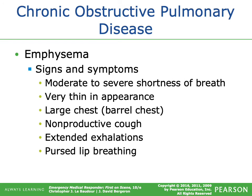Someone with emphysema presents with moderate to severe shortness of breath, is generally very thin in appearance with a large barrel chest, and often has a non-productive cough because there isn't increased mucus production. You'll see extended exhalations — they have a hard time getting air out — and pursed lip breathing, where the patient holds their lips tightly while exhaling. This increases the exhalation phase and causes back pressure deep within the lungs, believed to assist with keeping the alveoli open and promoting gas exchange.